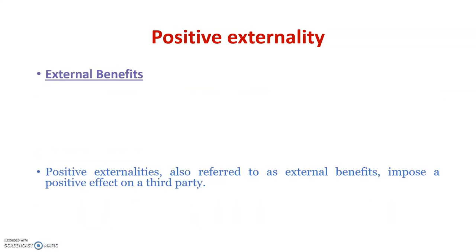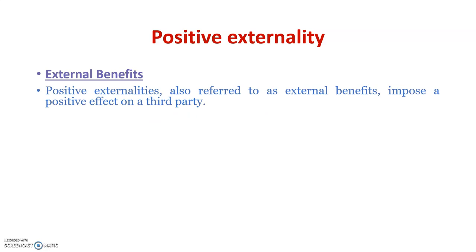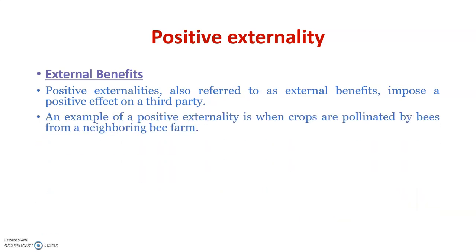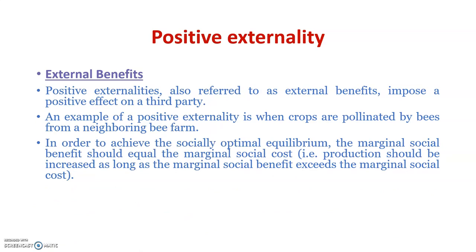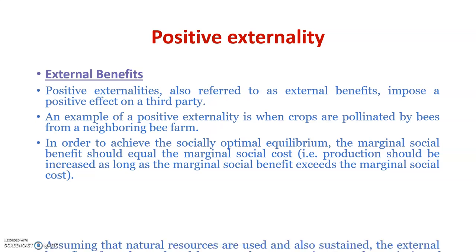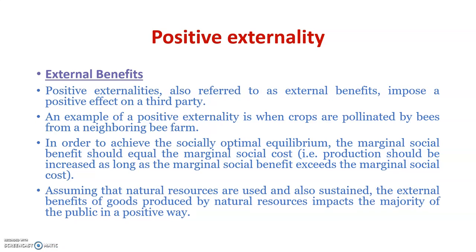Positive externalities, also referred to as external benefits, impose a positive effect on a third party. An example is when crops are pollinated by bees from a neighboring bee farm. In order to achieve the socially optimal equilibrium, the marginal social benefit should equal the marginal social cost. Assuming natural resources are used sustainably, the external benefits of goods produced by natural resources impact the majority of the public in a positive way.